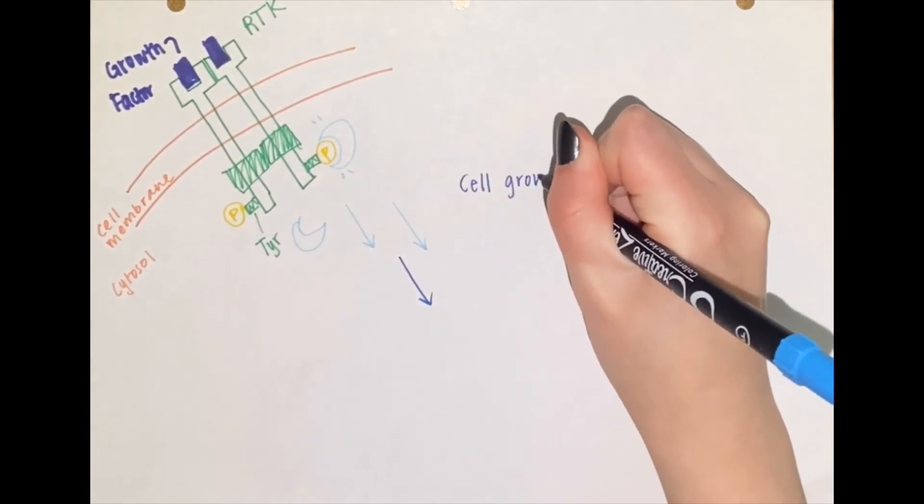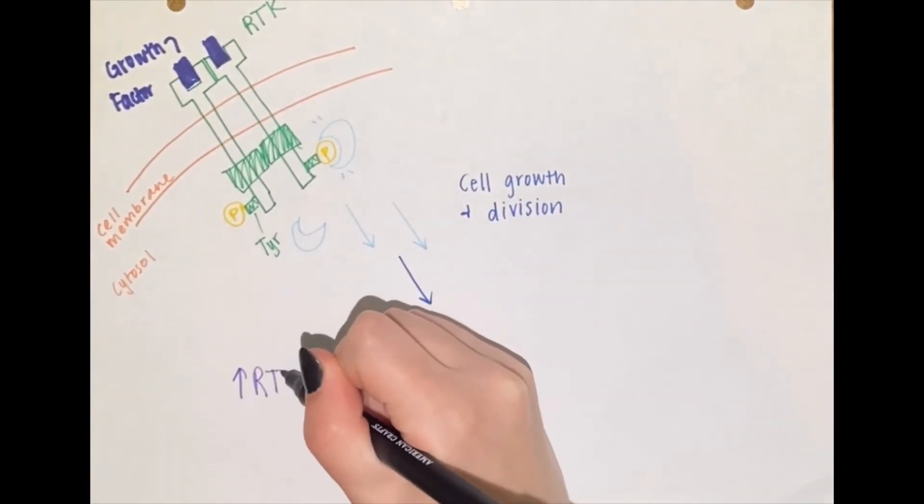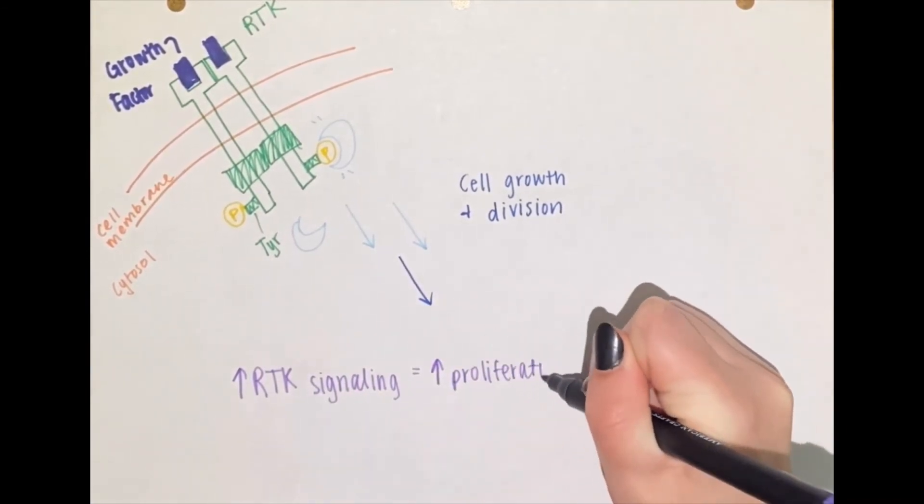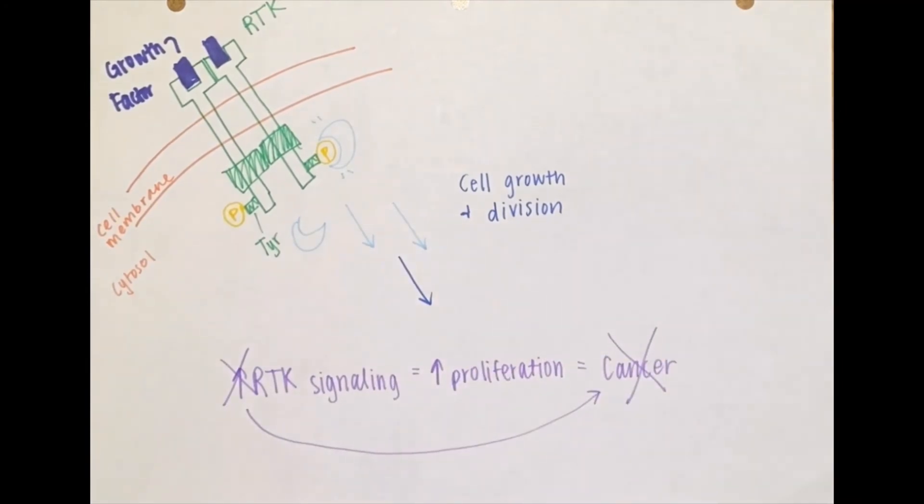EGFR tyrosine kinase inhibitors can then be used as cancer treatment to block the overactive activity. However, an underactive EGFR has been linked to Alzheimer's disease interestingly enough.